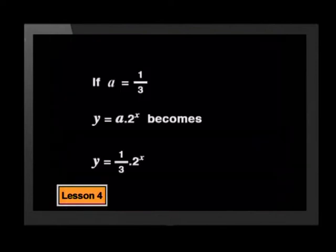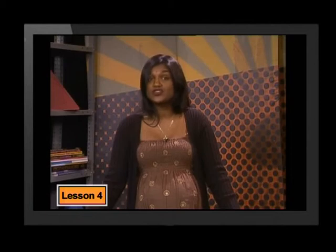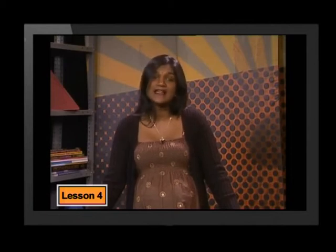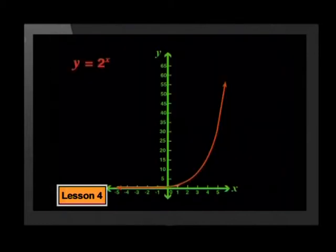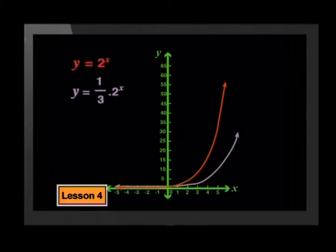Let's use an a-value of one third. The new equation will be y equals one third times 2 to the power of x. I will draw this graph onto the same set of axes as the parent graph so that we can compare the two. Here is the parent graph, and here is the graph of y equals one third times 2 to the power of x. The graph has been pulled vertically toward the x-axis.